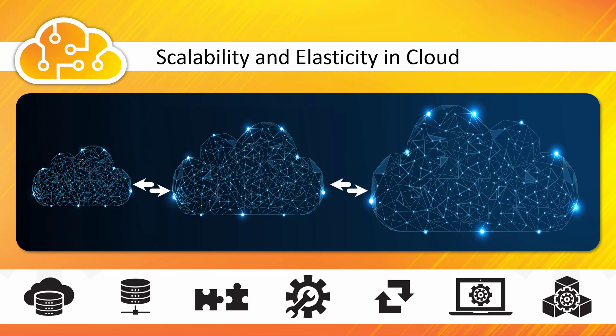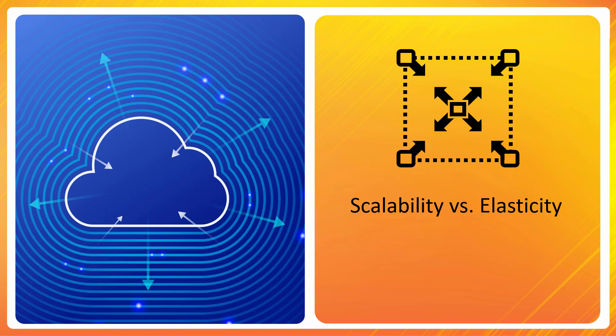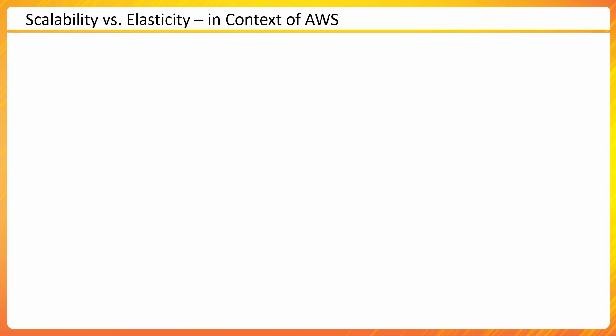One of the advantages of cloud is scalability and elasticity. Though these two words are used interchangeably in day-to-day language, there is a technical difference between them. I'll highlight that difference — scalability versus elasticity — and then we'll see how AWS allows you to implement both within your application or architecture built on cloud.